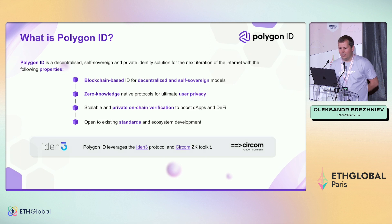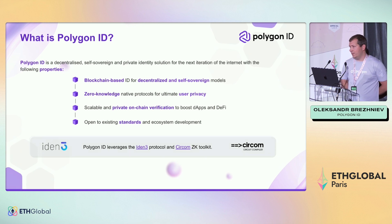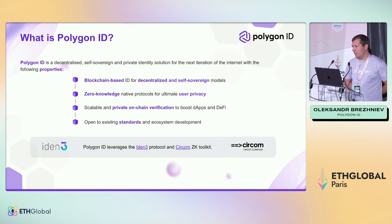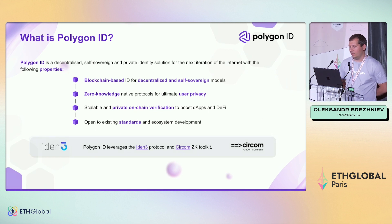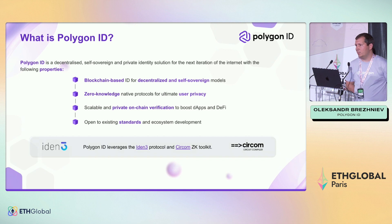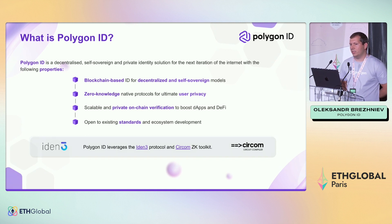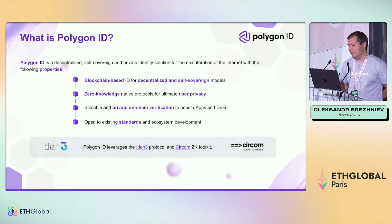So what's Polygon ID? Polygon ID is a self-sovereign identity solution. It's built with zero-knowledge proofs technology and based on verifiable credential standards and decentralized identifiers.